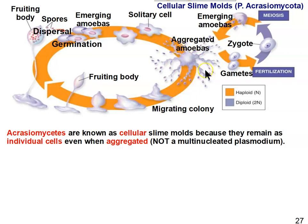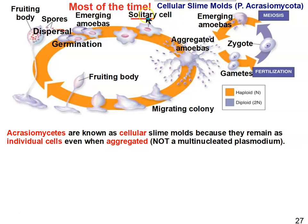When acellular slime molds aggregate, they lose their plasma membranes and become one big giant supercell called a plasmodium. So when the diagram says 'not a multinucleated plasmodium,' that's to differentiate these cellular slime molds from the acellular slime molds on the next slide. Cellular slime molds are considered cellular because they are solitary cells most of the time in their life cycle; they only aggregate for asexual reproduction.